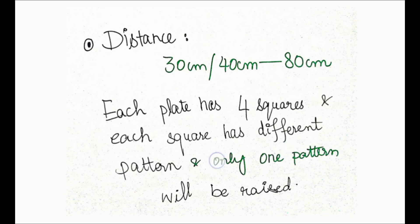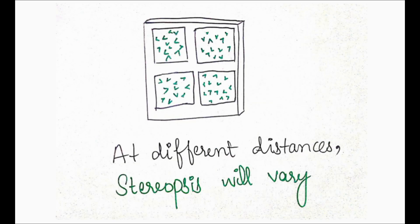Each plate has four squares, and each square has a different random dot pattern. To find the stereopsis value, out of the four squares, the patient will see one square with a slightly raised pattern. Only one square out of the four will appear to be a bit raised.